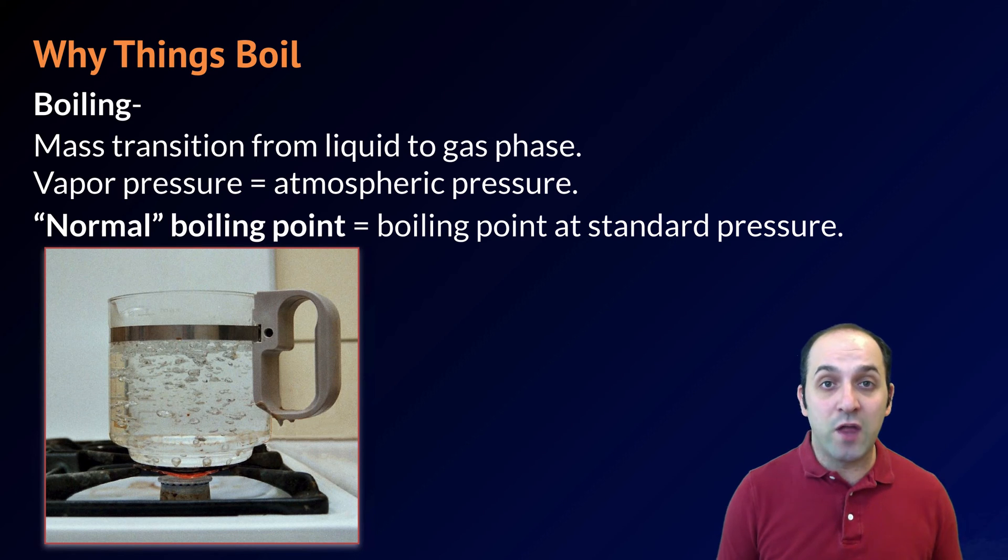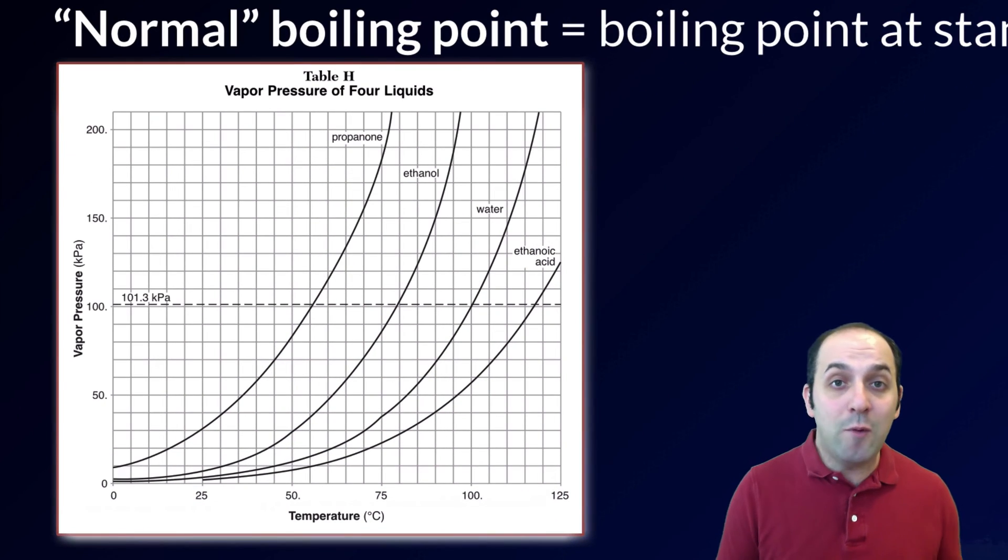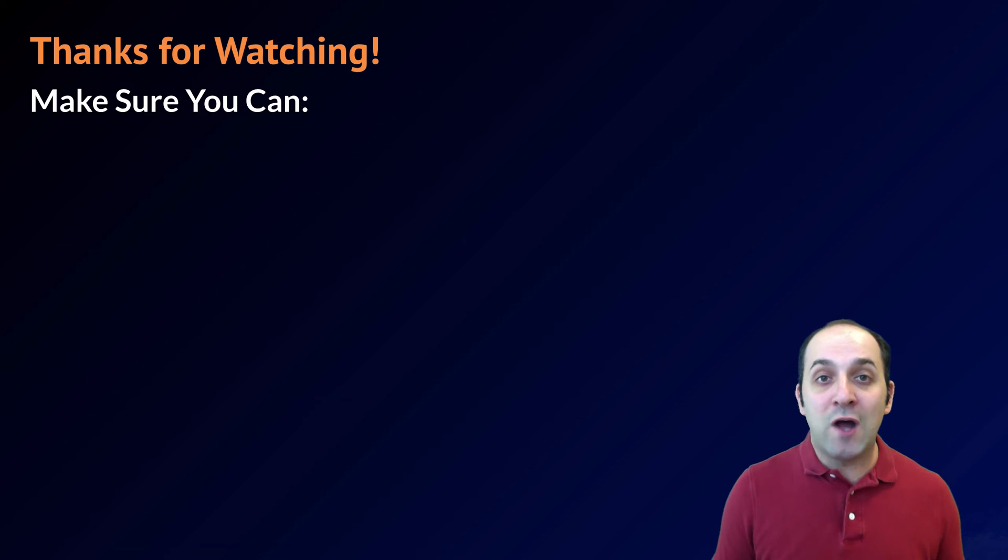Reference table H shows us the relationship between the vapor pressure and the temperature of the boiling point for those four substances. And the normal boiling point is shown to us as a dashed line on the graph, which makes our life a lot easier if we have to figure out what the boiling point is under standard atmospheric pressure. Thanks for watching our discussion of vapor pressure and why liquids boil.